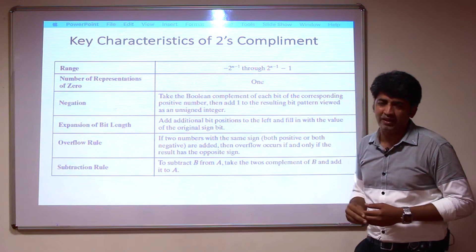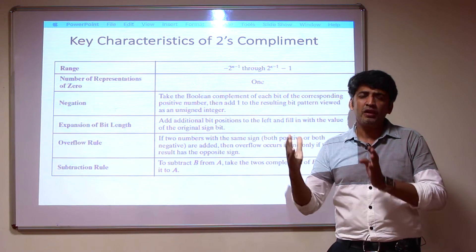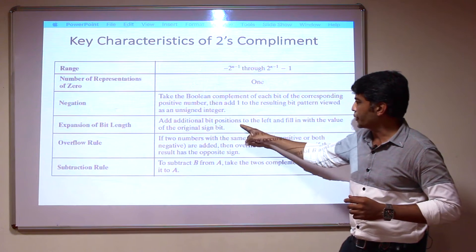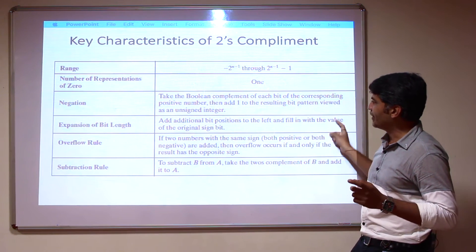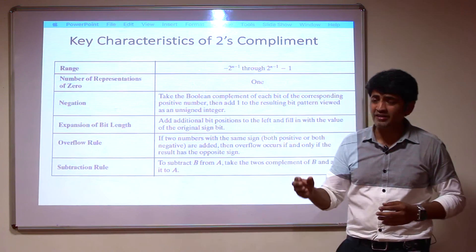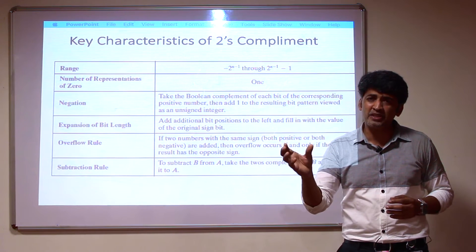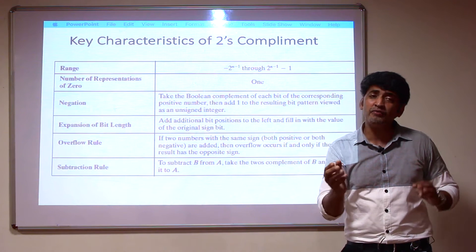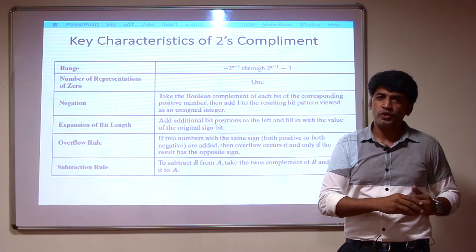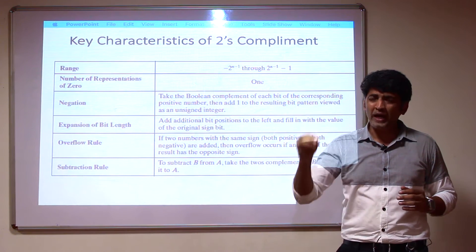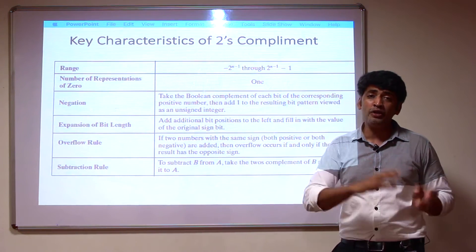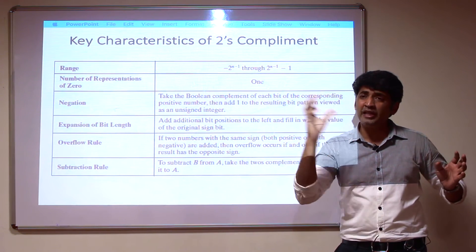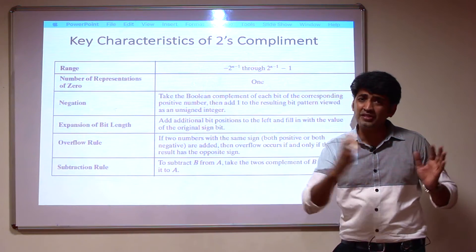The next characteristic is expansion of the bit length — for example, moving from a 4-bit to an 8-bit representation. Here, additional bit positions are added to the left and filled with the value of the original sign bit. So if the 4-bit representation is 1000 and you want to convert it into 8-bit, you fill the upper 4 positions with 1s (the sign bit value), giving 11111000 as the 8-bit representation.